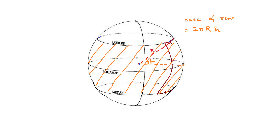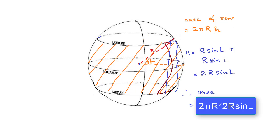So the area of the whole slice is 2π r times the height of the slice between two latitudes. This height is r sine l above and r sine l below the equator, and so it is 2 times r sine l. Therefore the area of the whole slice is 2π r times 2r sine l.